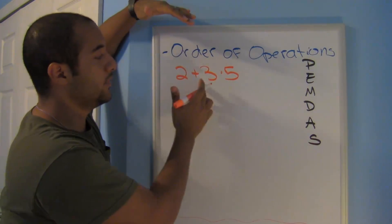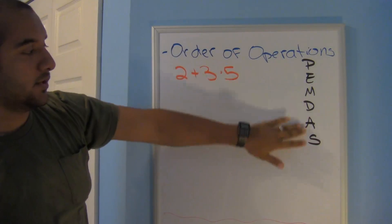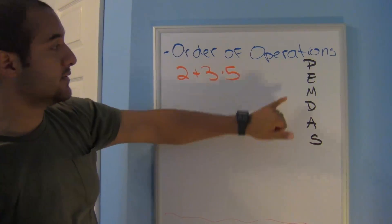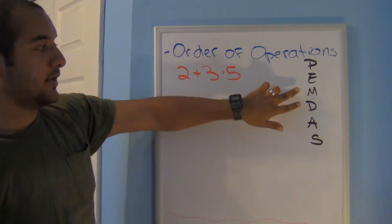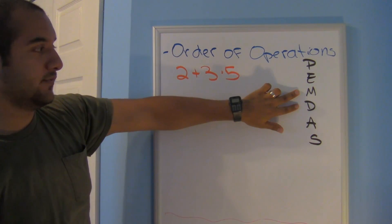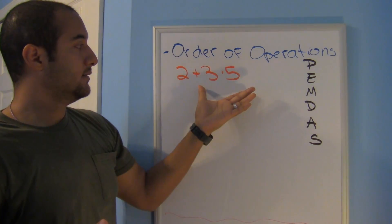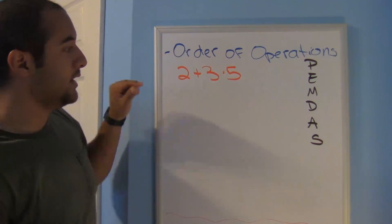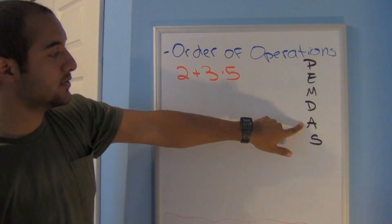Here we have 2 plus 3 times 5. I look at my order of operations. I don't have parentheses. I don't have any exponents. I do have multiplying and division. I always say those two at the same time because they feed off of each other. But here I don't have division, so I can just look at multiplication.